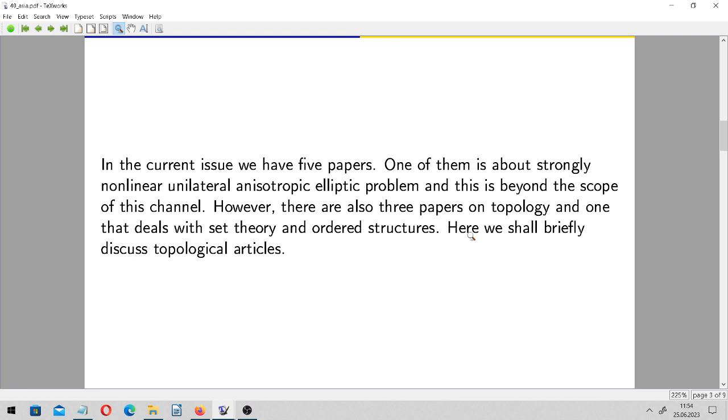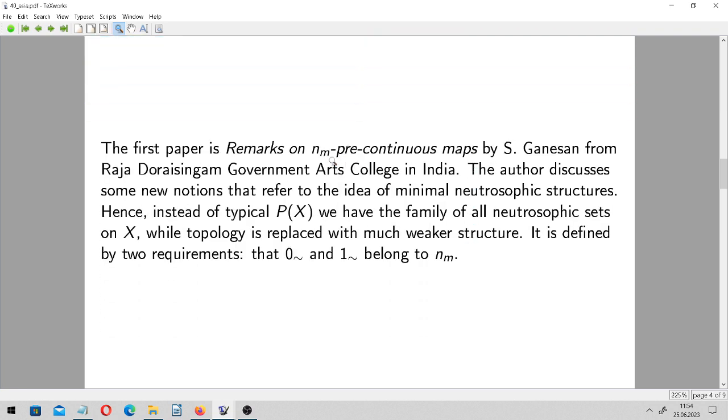So there are three. And the first of them is Remarks on NM Pre-Continuous Maps. And it's written by Ganeshan from Raja Doraisingam Government Arts College somewhere in India, in Tamil Nadu. And as you can read, the author discusses some new notions that refer to the idea of minimal but neutrosophic structures. So they are neutrosophic. So instead of typical power set of X and classical sets, we have the family of all neutrosophic sets on X.